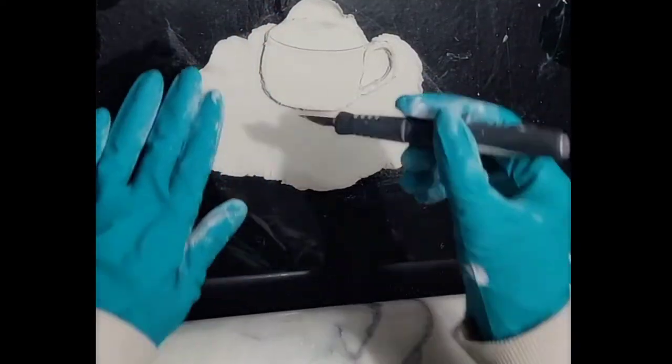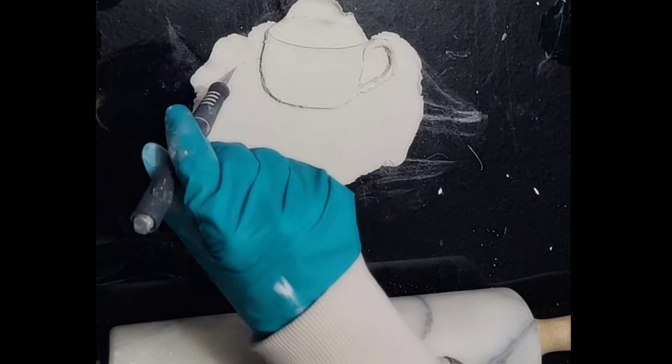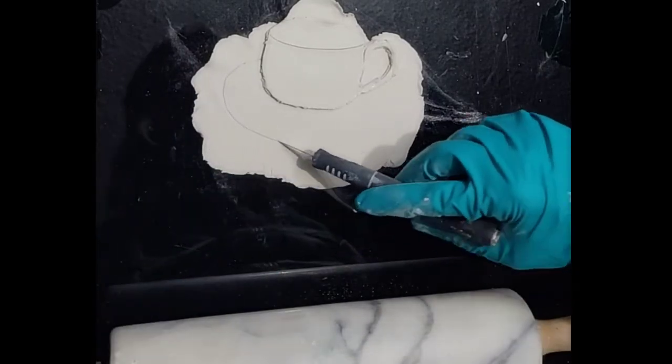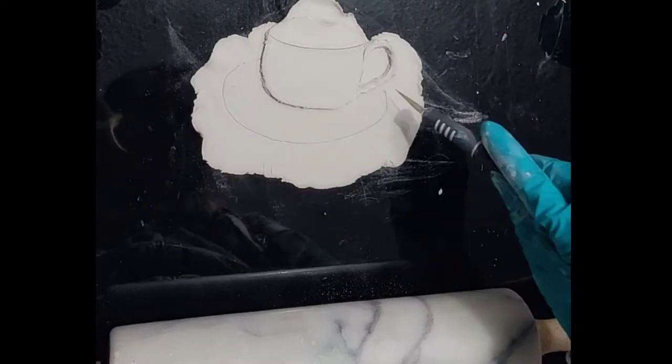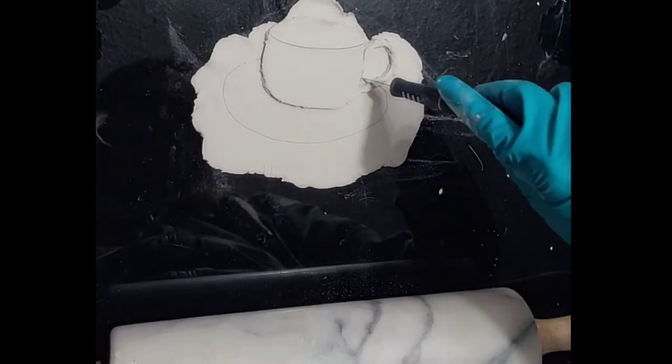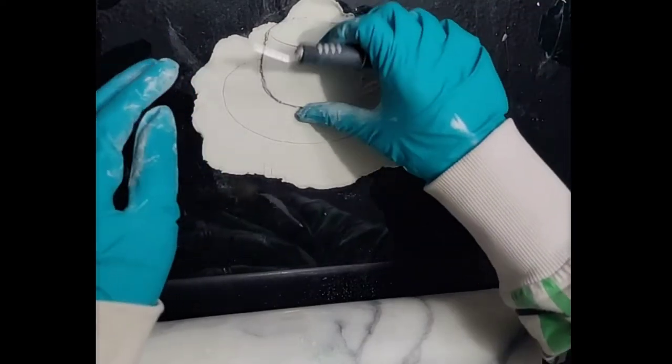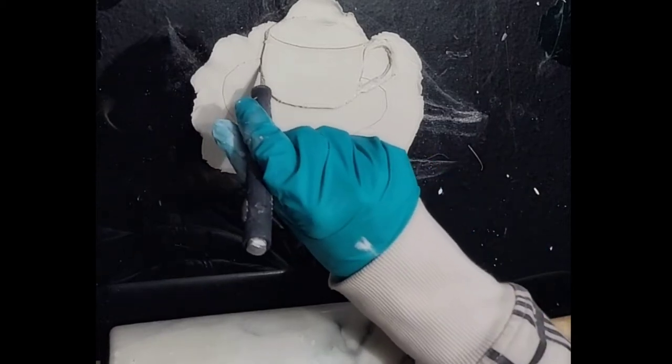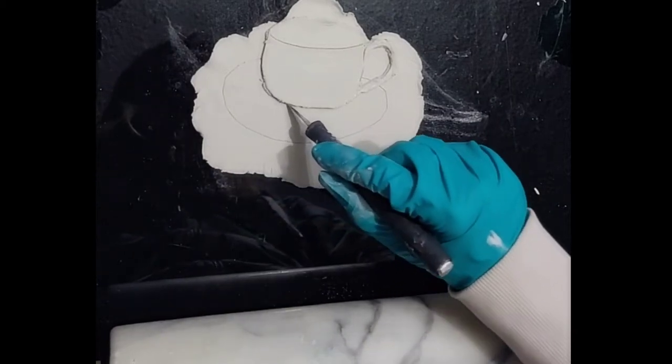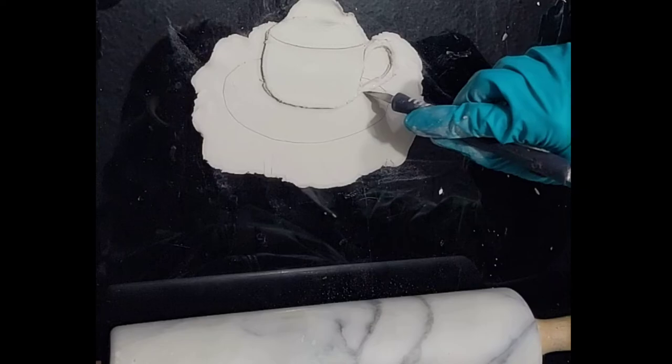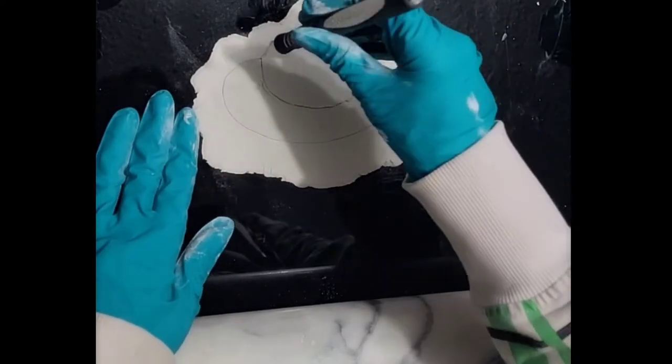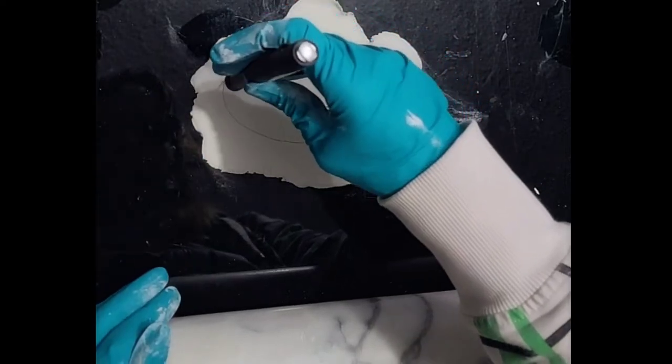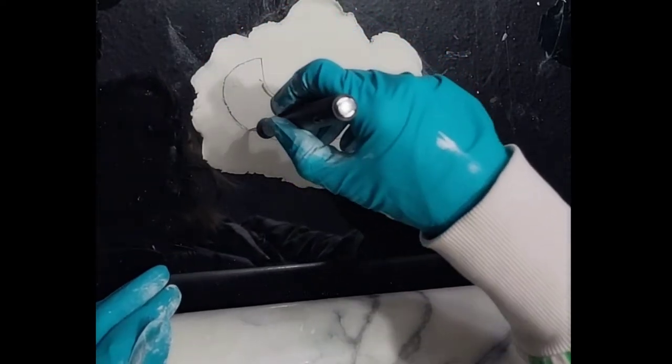We're going to roll out another piece of clay and make our saucer for our cup. I find doing it in two separate pieces gives us more of that 3D effect that we want, and then we'll just cut that out as well.